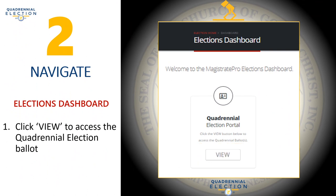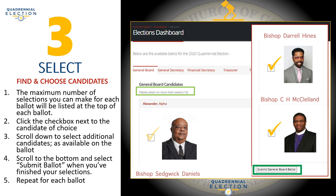Step two: navigate to the elections dashboard. Click view to access the quadrennial election ballot. Select, find, and choose candidates. The maximum number of selections you can make for each ballot will be listed at the top of each ballot. Click the checkbox next to the candidate of your choice.